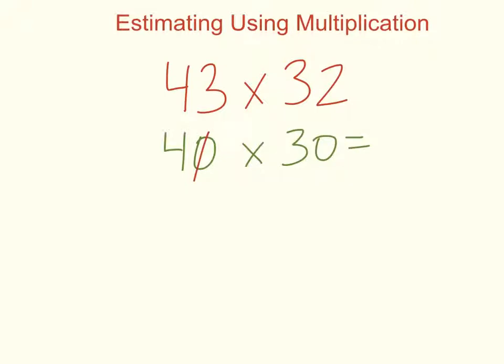Then I cross out my two zeros. 4 times 3 is 12, and I tack on two zeros. Excellent.